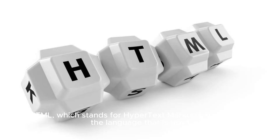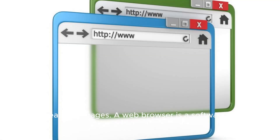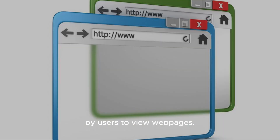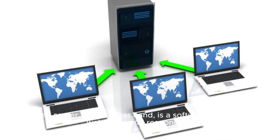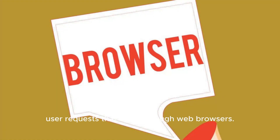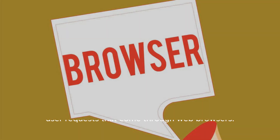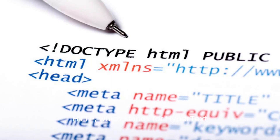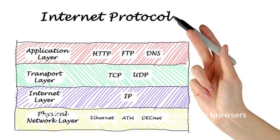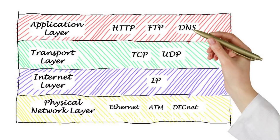HTML, which stands for Hypertext Markup Language, is the language used to create webpages. A web browser is software used by users to view webpages. A web server, on the other hand, is software that stores webpages and responds to user requests that come through web browsers. HTTP, which stands for Hypertext Transfer Protocol, is the set of rules that web browsers and web servers use to communicate with each other.